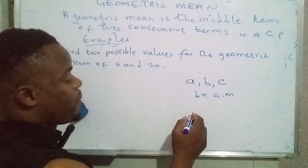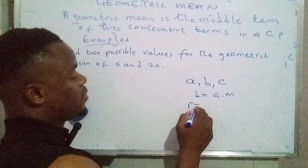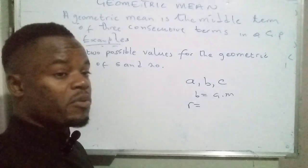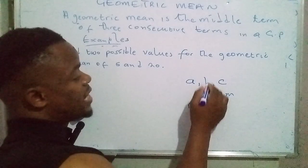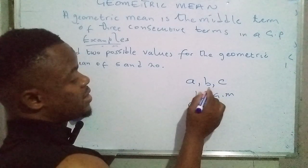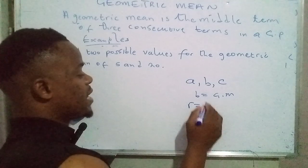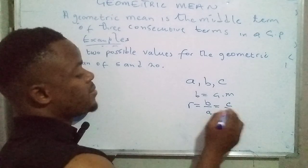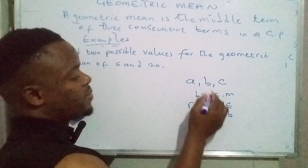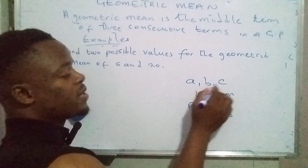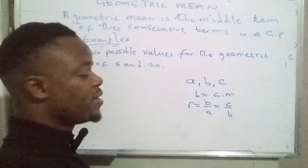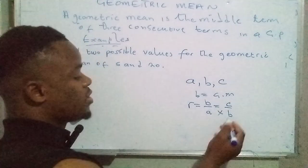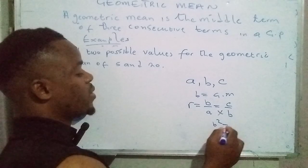R denotes the common ratio. We say the second term divided by the first term is equal to the third term divided by the second term. So in this case, B over A equals C over B. We can now cross multiply to get rid of the fractions, so B multiplied by B gives us B squared,